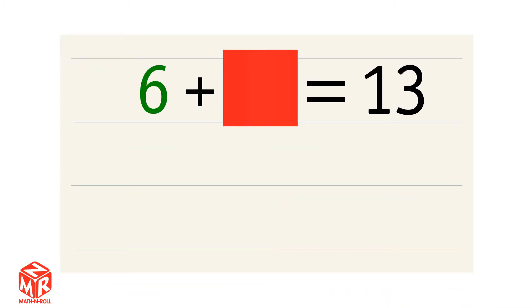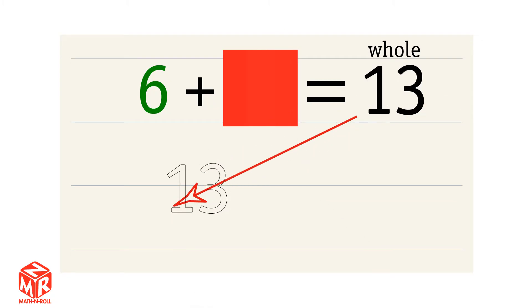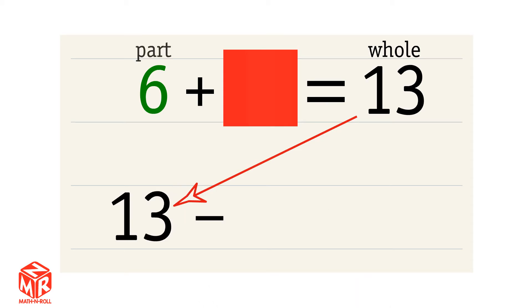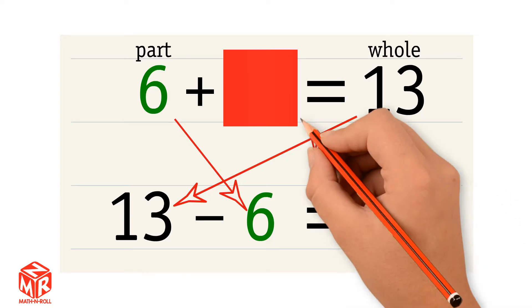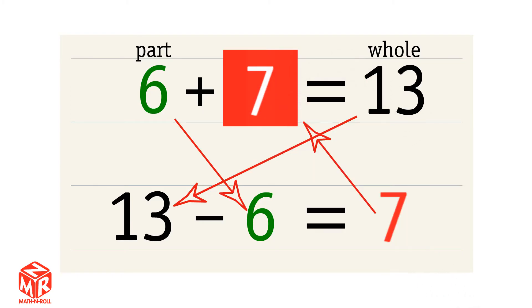Let's try another example. 6 plus an unknown number equals 13. To find the missing number, we take the whole, 13, and subtract the part that we know, 6. So 13 minus 6 equals 7. 7 is the unknown number. 6 plus 7 equals 13 and 13 minus 6 equals 7 are related facts. We use related facts to find unknown numbers.